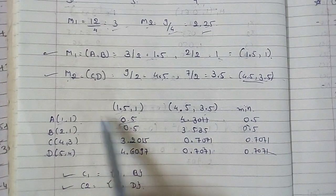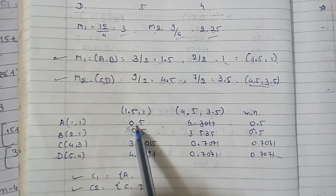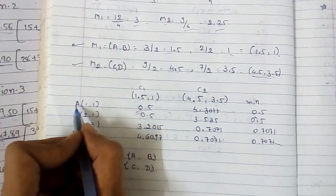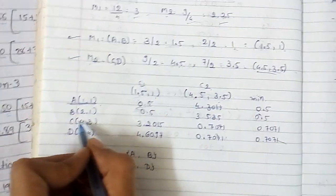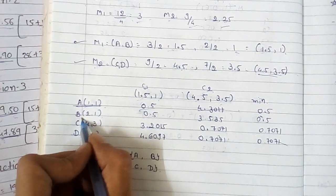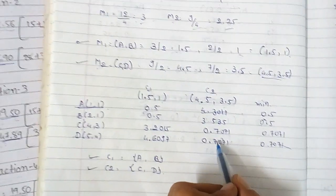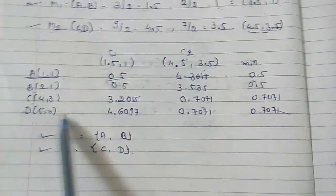Now create the cluster based on the distance. Here minimum value is 0.5, so you can consider c1 and c2. You can consider this value as c1 cluster, and B also in c1 cluster.